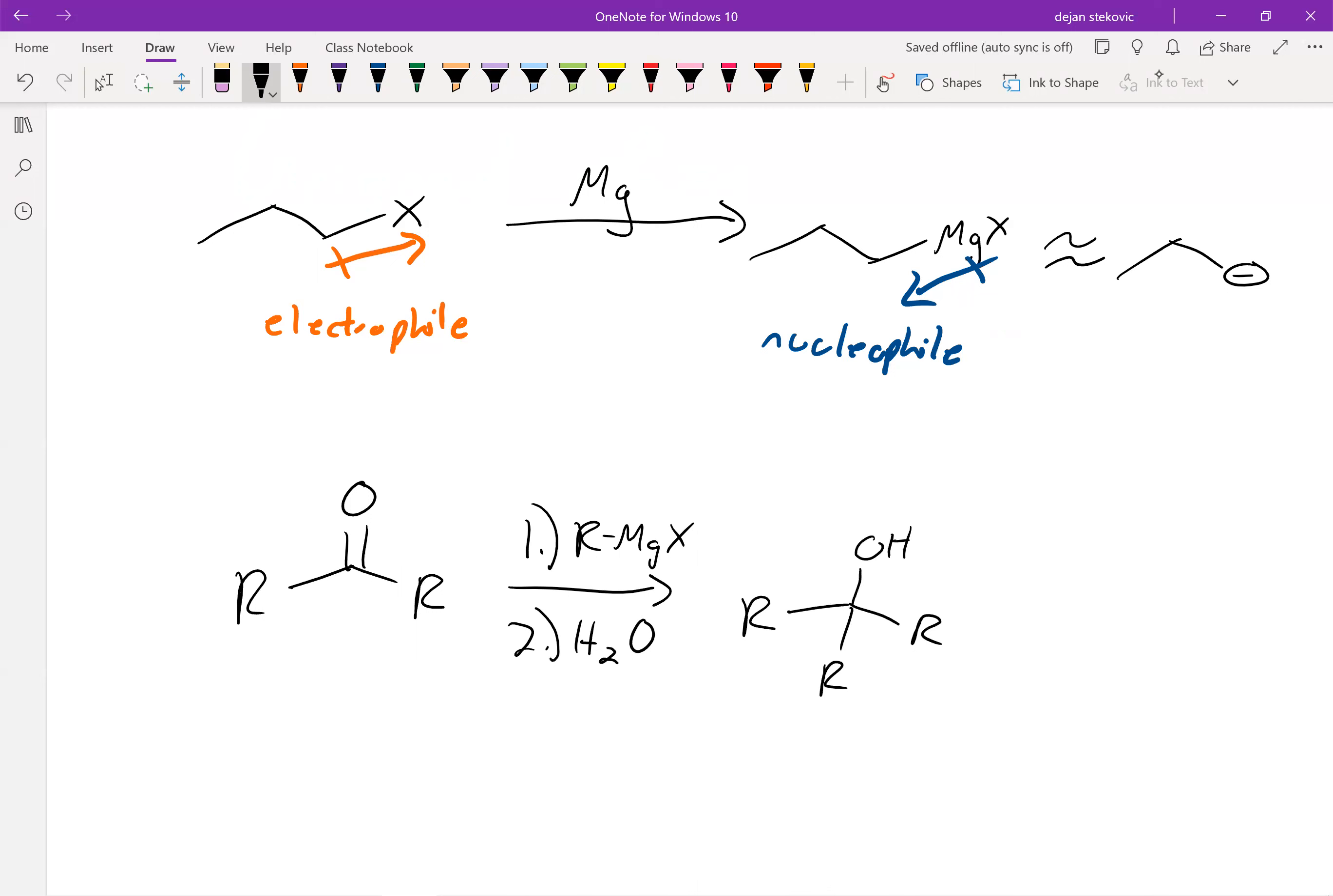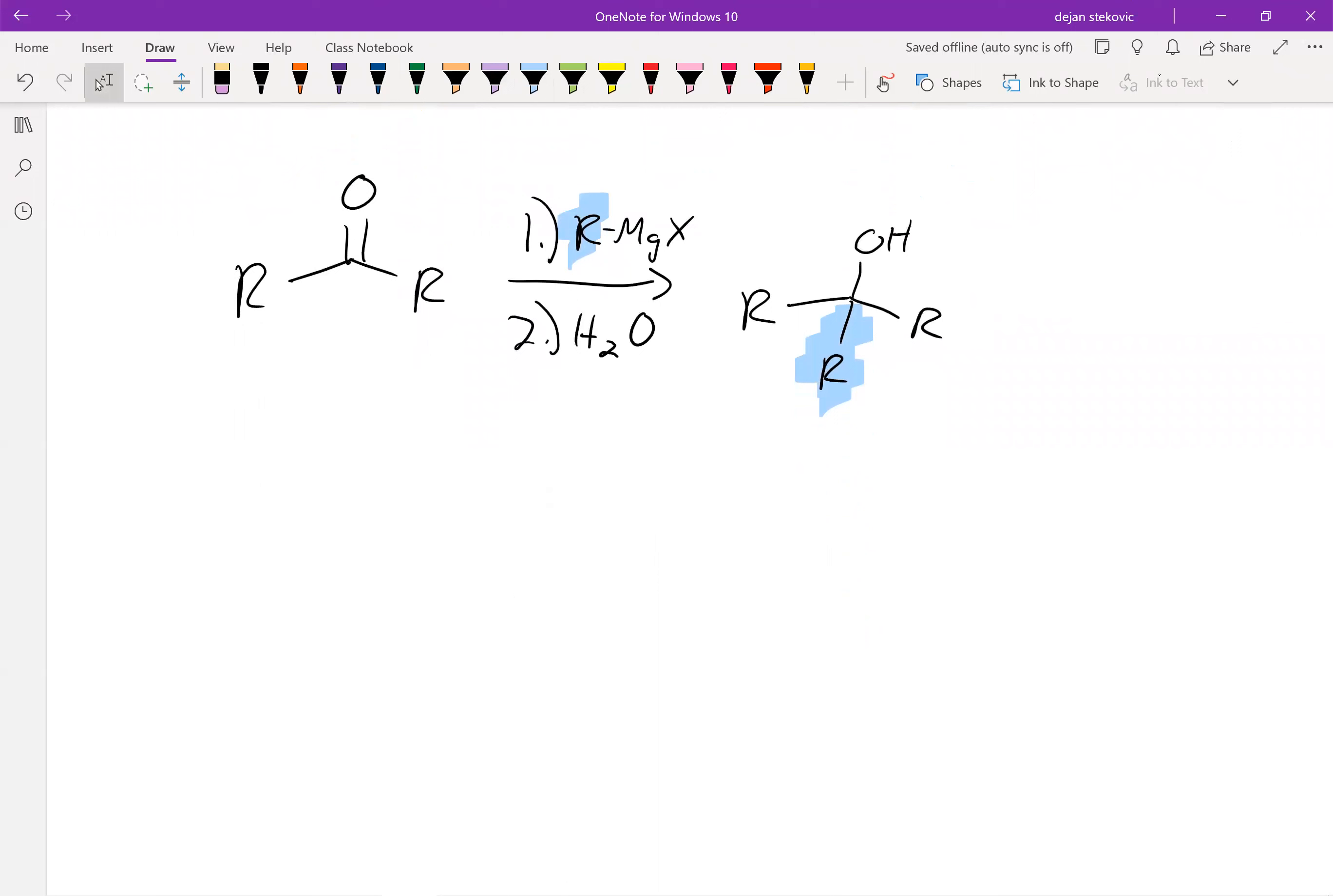And so what this does is it transforms the carbonyl into an alcohol and adds whatever R group was attached. So this is a really powerful reaction because you can make all kinds of large molecules. The mechanism for this is relatively simple and pretty much the same as our hydrides.